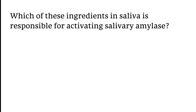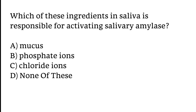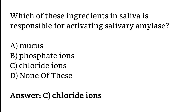Which ingredient in saliva is responsible for activating salivary amylase? Options: A) mucous, B) phosphate ions, C) chloride ions, D) none of these. The correct answer is option C. Chloride ions in saliva are responsible for activating salivary amylase.